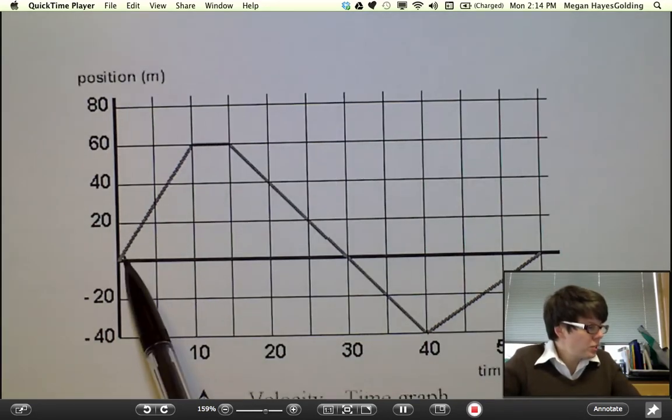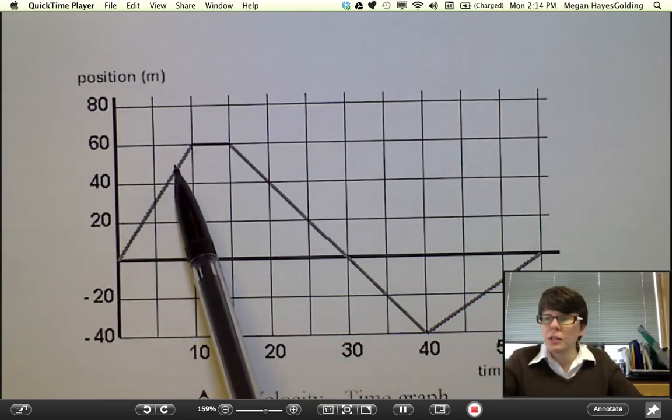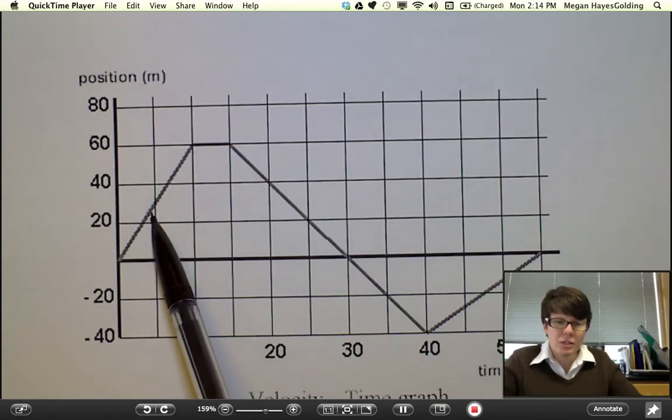So during a time when the slope of the position-time graph is positive, the object is experiencing positive velocity. There's a case of positive velocity.